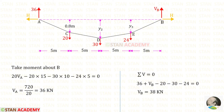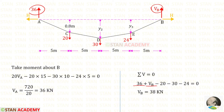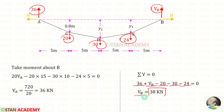Now let us apply the rule sigma V equals zero and find VB. VA and VB are acting upwards, so both of them are positive. These three loads are acting downwards, so all three of them are negative. Finally, for VB we will get 38 kN.